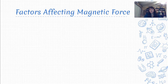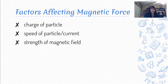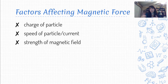Qualitatively, what are some things that would affect how big a force a charged particle might feel inside a magnetic field? The charge of the particle makes a big difference — if there's no charge, there's no force, so the more charged the particle, the bigger the force. The faster the particle or current is moving, the bigger the force will be, because if there's no velocity, there's no force. And lastly, the strength of the magnetic field will make a difference — a stronger magnet exerts a bigger force on things passing through that field.